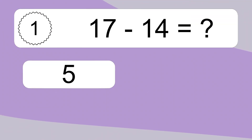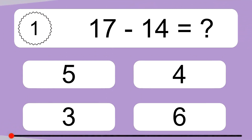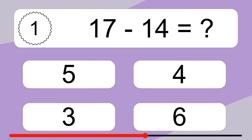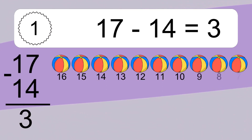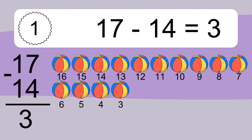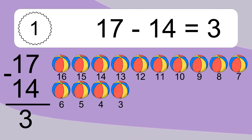17 minus 14 equals what? 17 minus 14 equals 3. Let's count it: 16, 15, 14, 13, 12, 11, 10, 9, 8, 7, 6, 5, 4, 3.